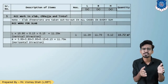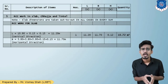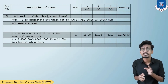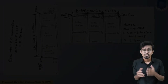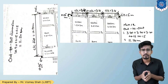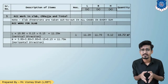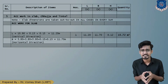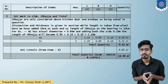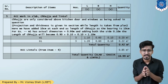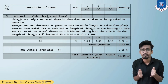The fifth quantity is RCC work for slab, chajja, and lintel. For RCC slab, dimensions are taken out-to-out: 11.9 m in the vertical direction and 11.7 m in the horizontal direction; slab thickness is 0.12 m, giving a slab quantity of 15.72 cubic meters. For RCC chajja, provided only over kitchen door and window, bearing is 0.1 m on each end, giving a chajja quantity of approximately 0.4 cubic meters.